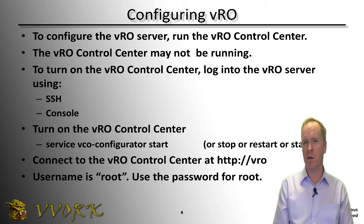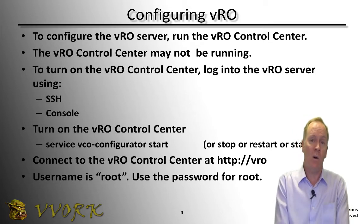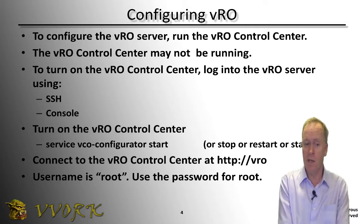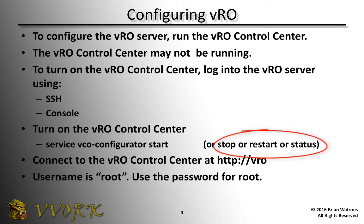To configure the Orchestrator server, you'll use a utility called the Orchestrator Control Center. Now, Orchestrator Control Center may not be running on your system. So in order to either check whether it is or isn't, or to actually turn it on, you can connect to your Orchestrator server using either SSH or the console, log in as root, and then type the command: service vco-configurator start. The option we need right now is start.